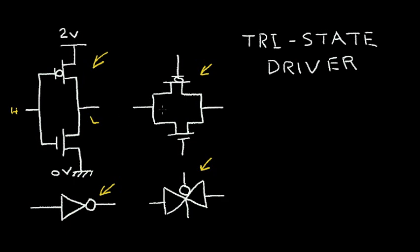The CMOS switch can exist in two different conditions — it can either be closed. When the switch is closed, both transistors are in the on condition, so the gate of the N-channel is at a high voltage, and the gate of the P-channel is at a low voltage.